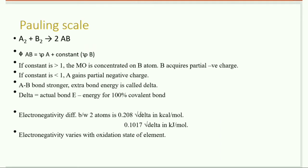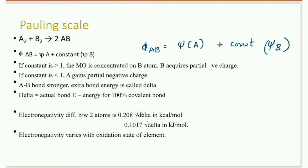Now, the Pauling scale. Consider the reaction: A₂ + B₂ → 2AB. The wave function can be written as φ(AB) = ψ(A) + c·ψ(B), where c is a constant. If the constant c is greater than 1, the molecular orbital is concentrated on the B atom, so B acquires a partial negative charge, A acquires a partial positive charge, and the bond becomes slightly polar.